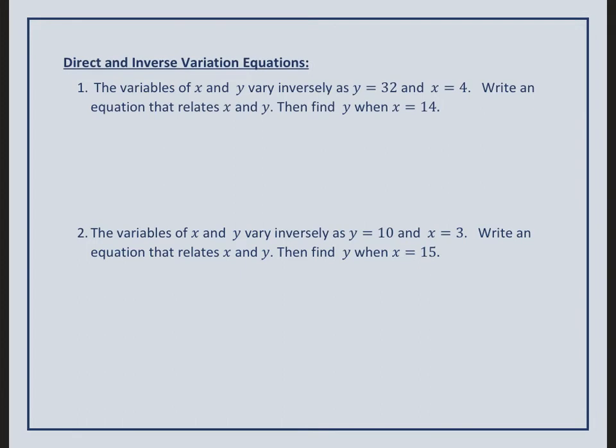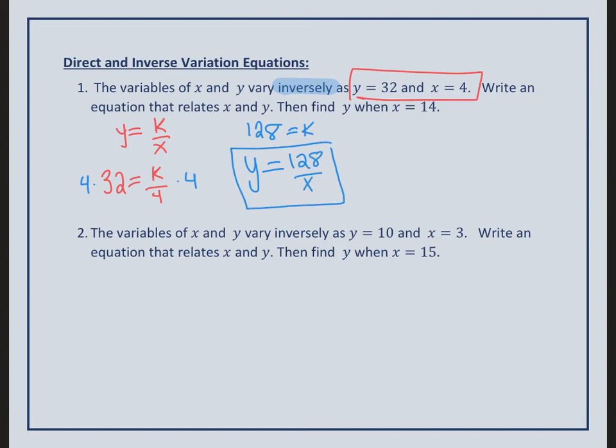Now we're going to use those two formulas again. We're going to use the direct and inverse formula to find my k value and write an equation. We're going to start off by reading that the variables of x and y vary inversely. Super important because it's going to tell me which formula I need to use. My formula for inverse is y equals k over x. And what it tells me next is that my y equals 32 and my x equals 4. So when my y equals 32, my x equals 4. And this is why we got the whole multiplying - how do I get rid of a divide by 4? I'm going to multiply by 4 on both sides. And yeah, it's a pretty big number. We have 128. So 128 equals k.